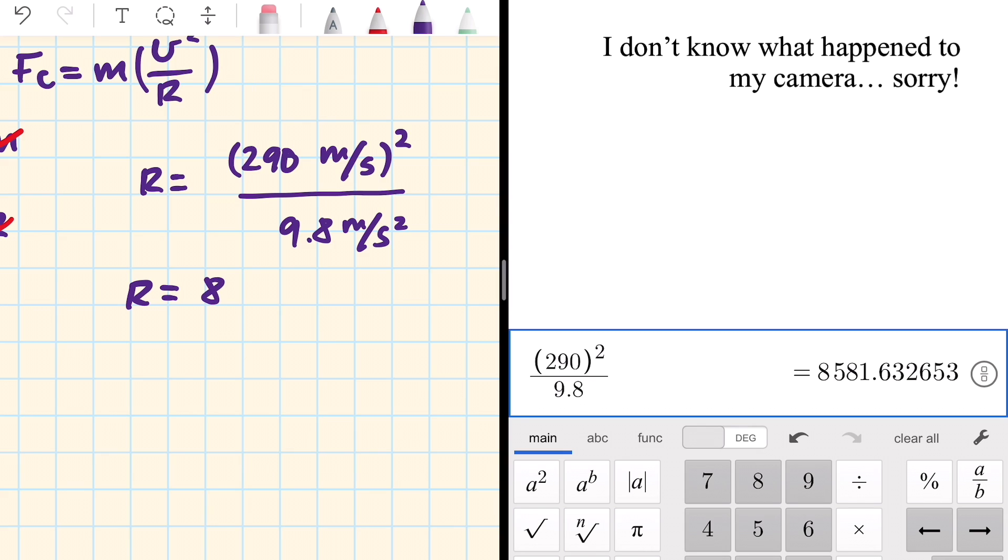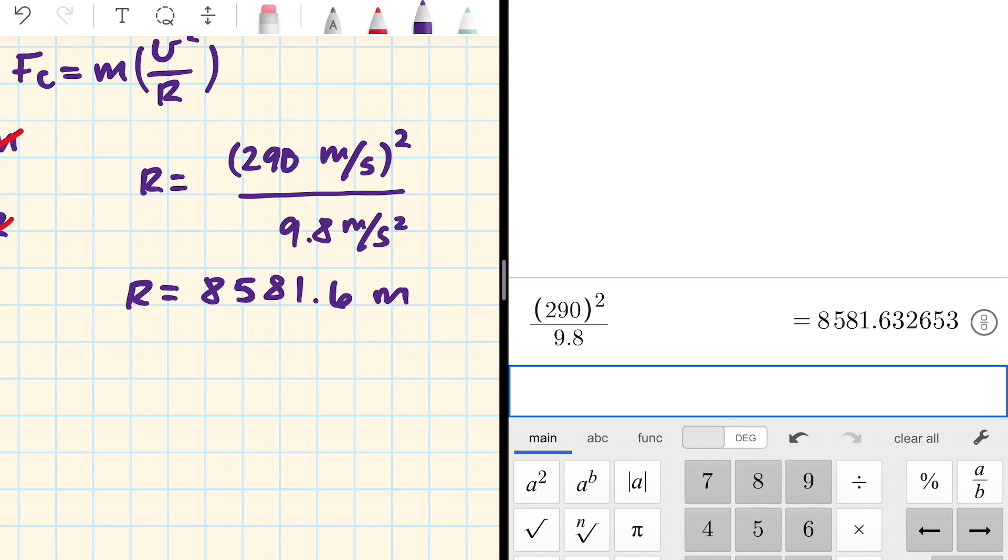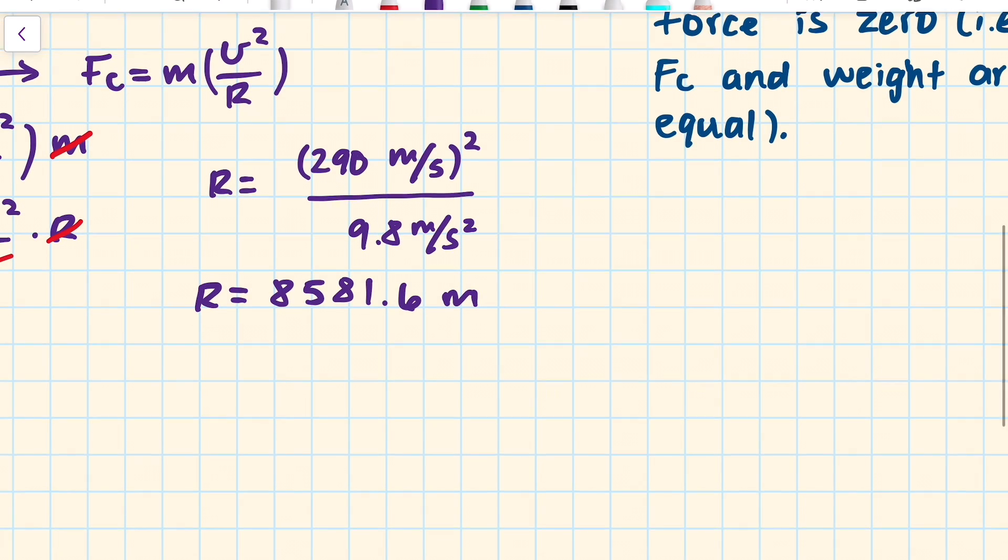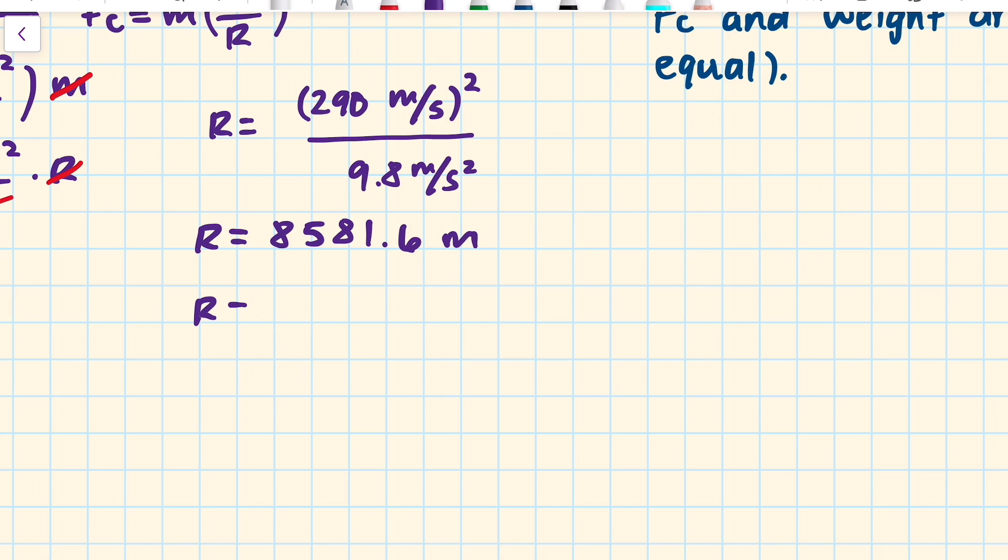So we have this radius in meters. 8,581.6 meters. And to find kilometers, I just divide by 1,000. That is, I move the decimal point three places to the left. And there you have it. 8.58 kilometers. I know I am not being very strict with significant figures. But that's okay.